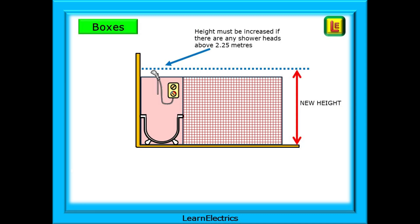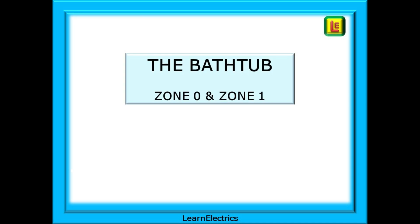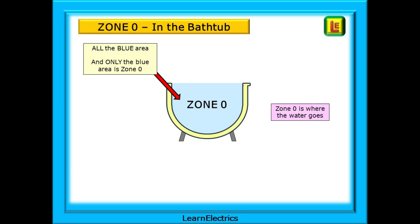The height requirement is 2.25 meters. However, if the shower head or other water outlet exceeds this height, then the height requirement increases with it. Zone 0 is the space inside the bathtub — all the blue area shown on this drawing and only the blue area. Think of zone 0 as where the water goes, right to the top of the bathtub.